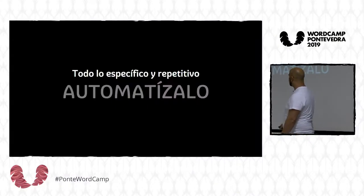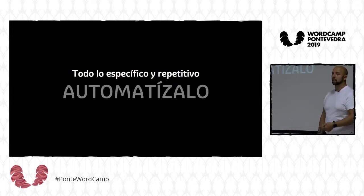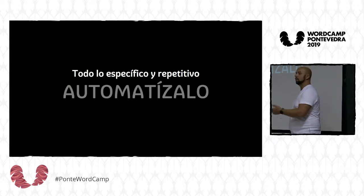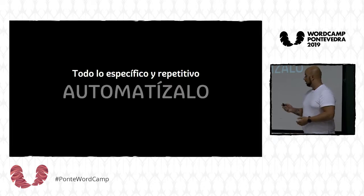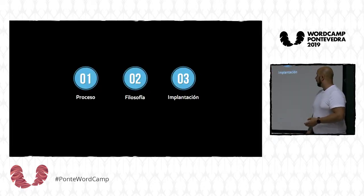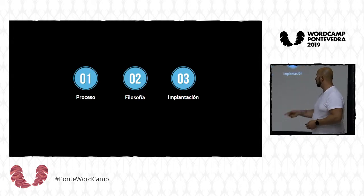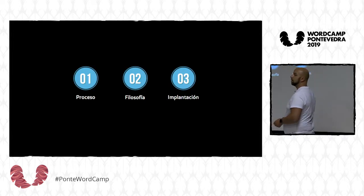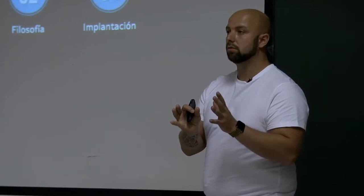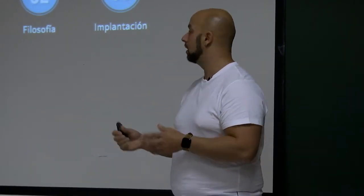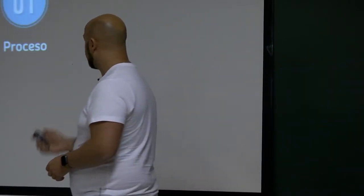Lo importante es que todo lo específico y repetitivo se tiene que automatizar. Siempre que tengáis procesos específicos y repetitivos, automatizarlos. En una plataforma online de cursos, tenemos que ver tres partes: el proceso, la filosofía y la implantación. Es lo que vamos a ver hoy.